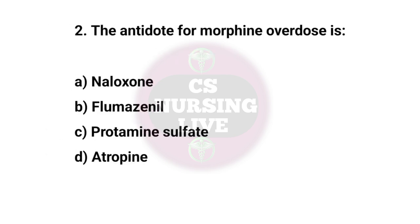Question No. 2. The antidote for morphine overdose is? Right answer is A. Naloxone.